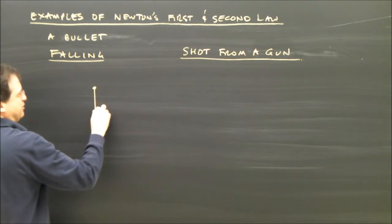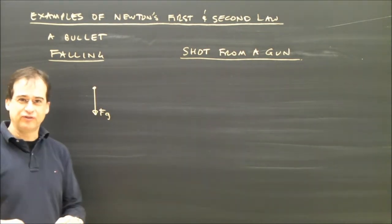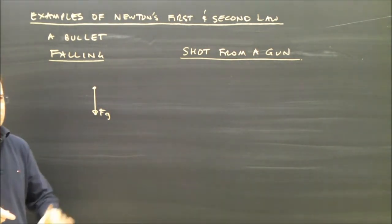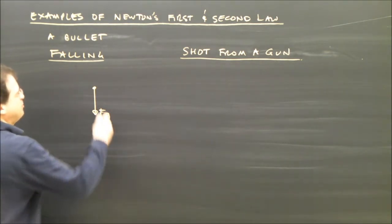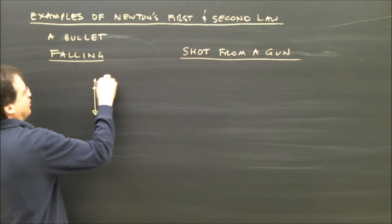Is there gravity? Yes. Is it sitting on a surface? No, so there's no normal force. Is there a rope tied to the bullet or a hand pushing it? No, there isn't. Is there friction? Well, there might be a little bit of air resistance, which would account as friction.